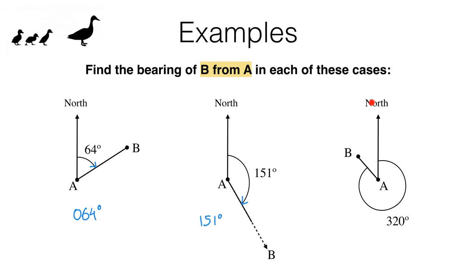Finally, in the last example we again want the bearing of B from A. Starting from A and facing north, the clockwise angle you would need to turn to point at B is 320 degrees, so the bearing is 320 degrees. This is already a three-digit number so we don't need any leading zeros at the beginning.